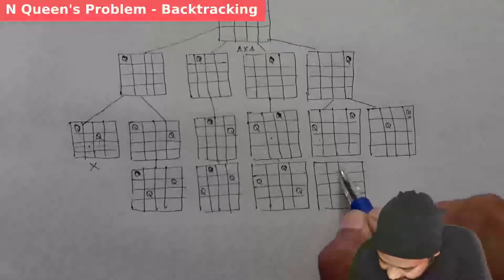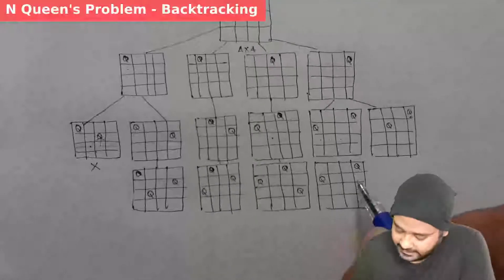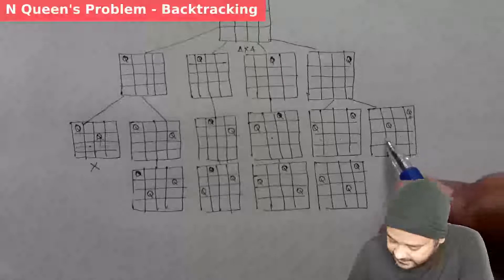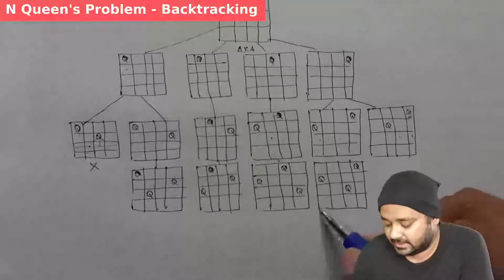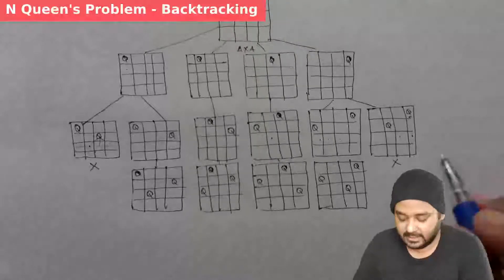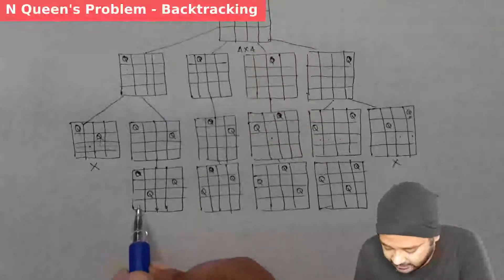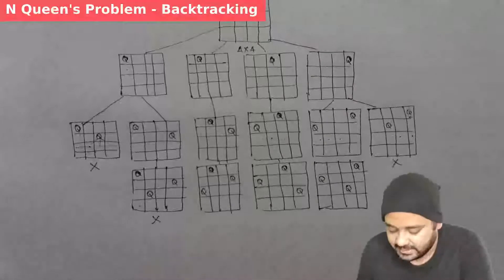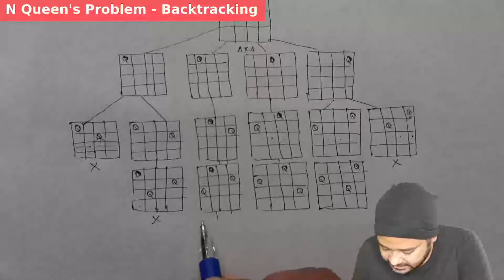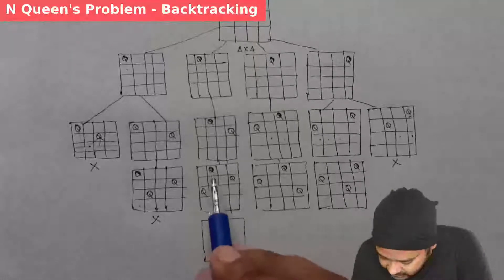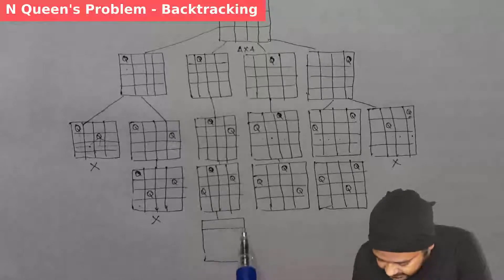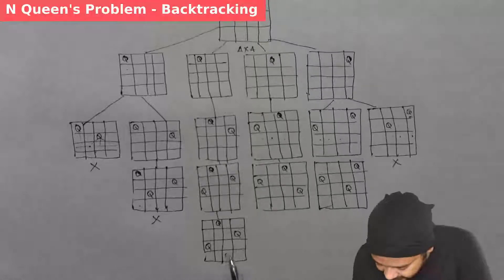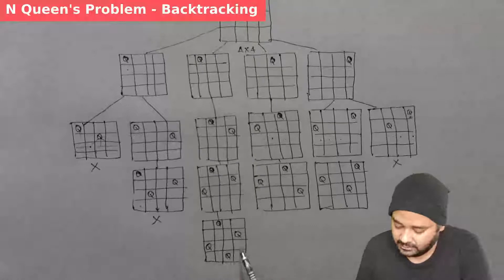In one path, the first, second, and third queens are placed, but all four positions in the fourth row are blocked — we cannot travel further in this path. Moving to the next option, we check if the fourth queen can be placed. Here it can be placed in a valid spot. So the first queen is here, second queen here, third queen here, and the fourth queen is placed in the third position — none of the queens meet each other. This is one valid solution.